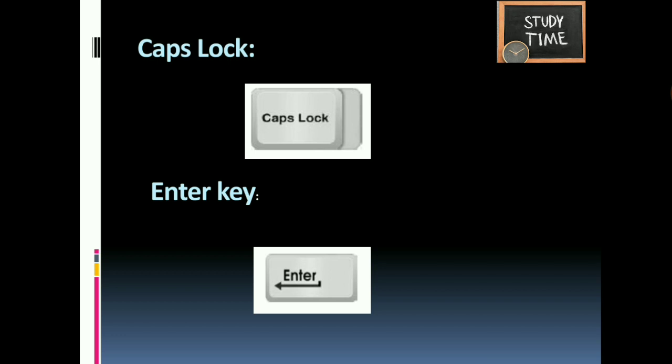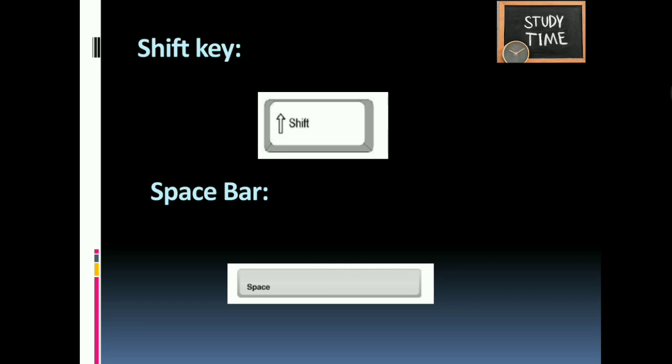Enter key: this key is used to finish a line and move to the next new line on the page. The Enter key is pressed after typing every command. There are two Enter keys on the keyboard. Shift key: the Shift key is present on both sides of the keyboard. It is a modifier key used to type capital letters and other alternate upper characters.